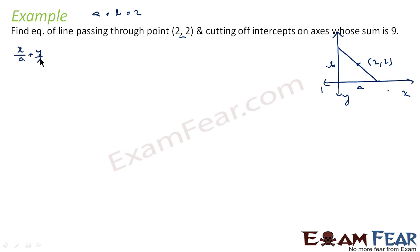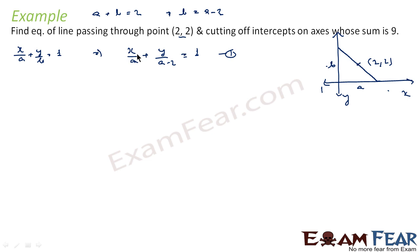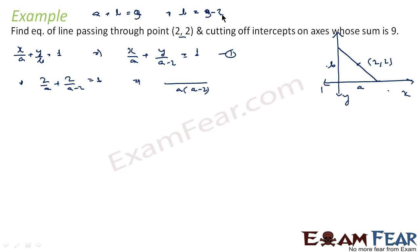We know the equation x/a + y/b = 1. Since a + b = 9, we have b = 9 - a. So the equation becomes x/a + y/(9 - a) = 1. Since the point (2, 2) satisfies this equation, we substitute x = 2 and y = 2: 2/a + 2/(9 - a) = 1.